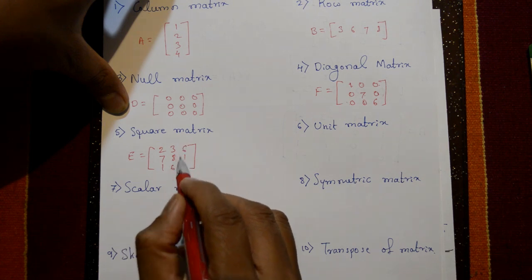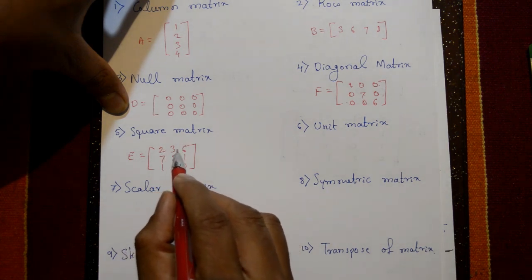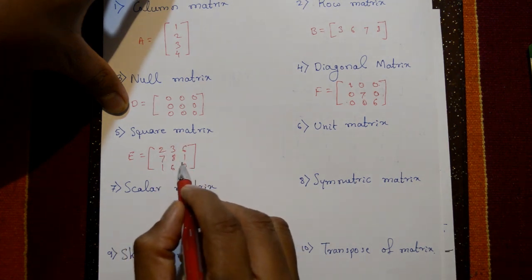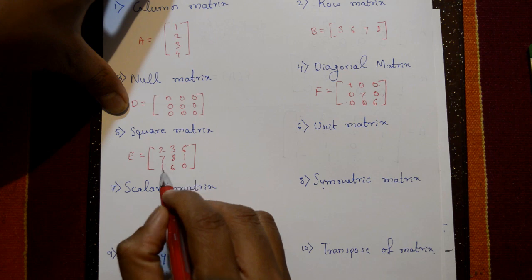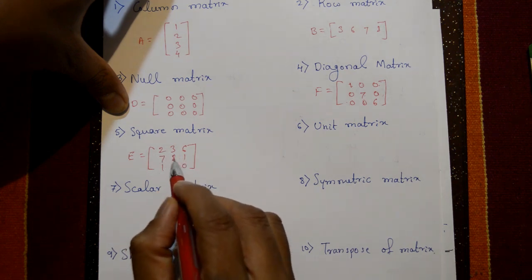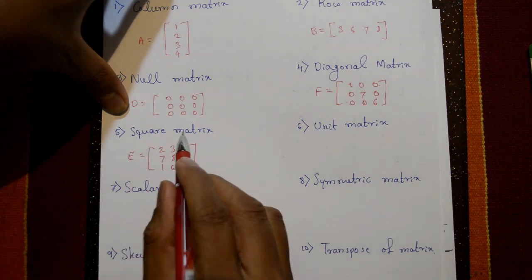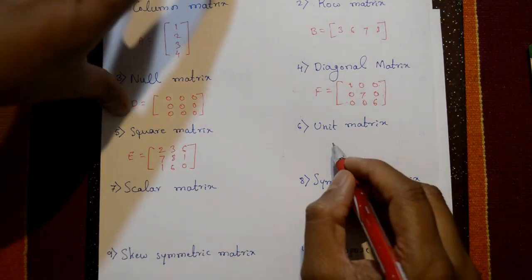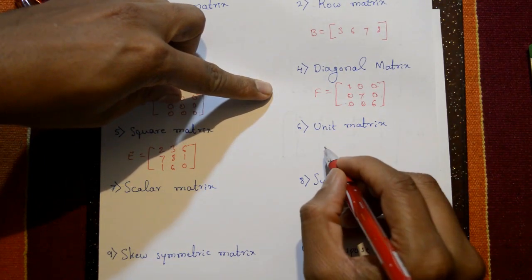When the number of rows equals the number of columns, it is called a square matrix. Number of rows equal to number of columns is the defining condition of a square matrix.